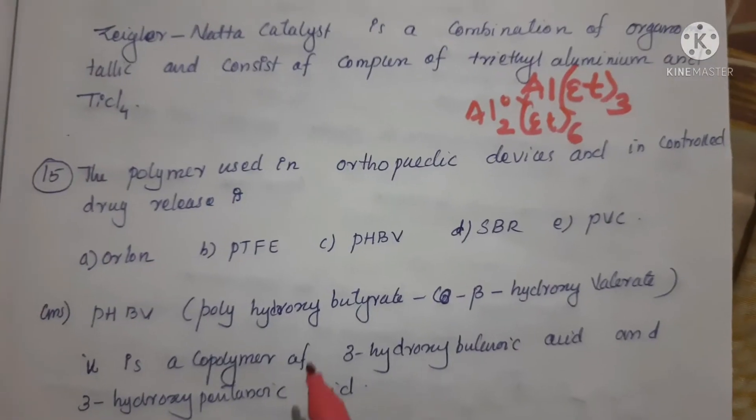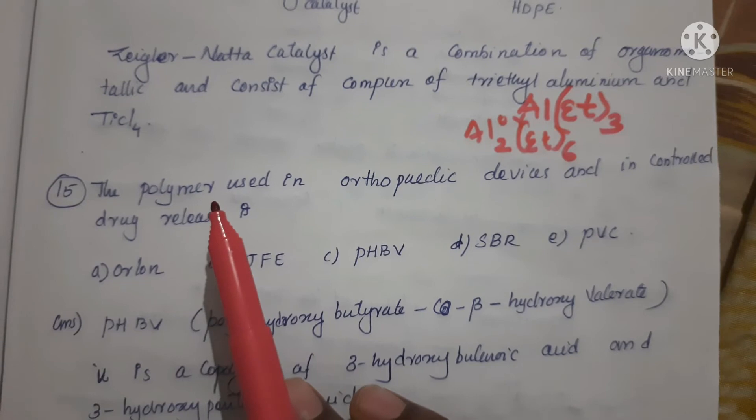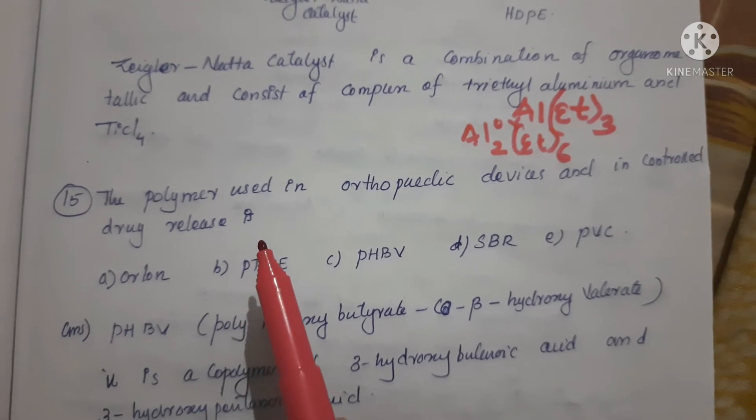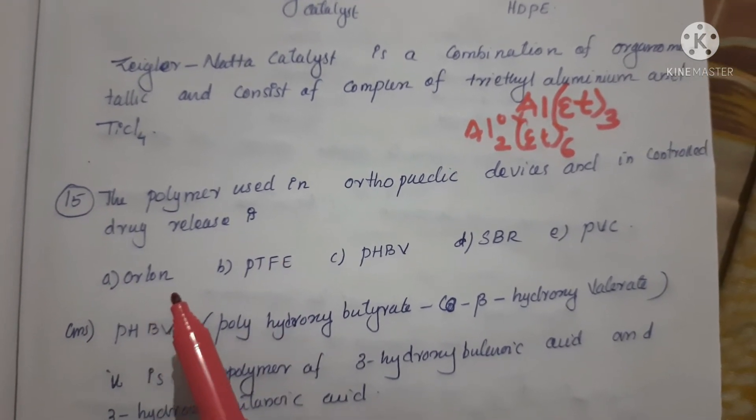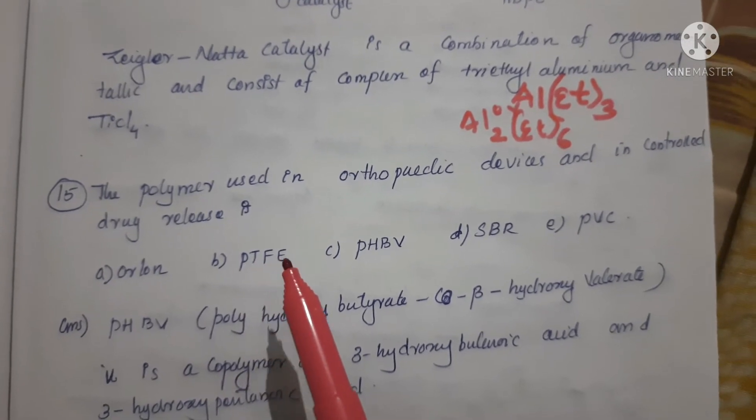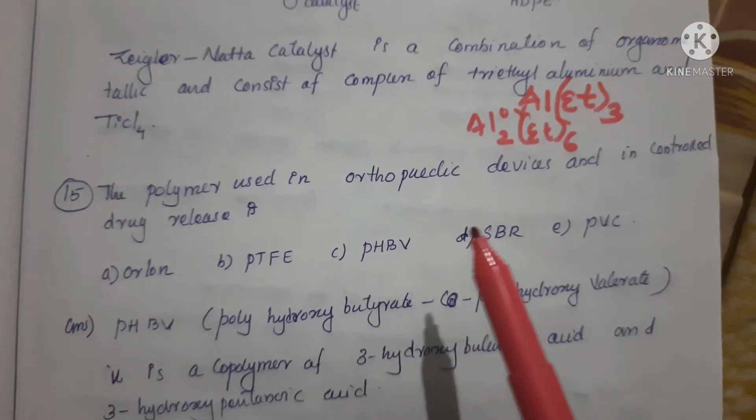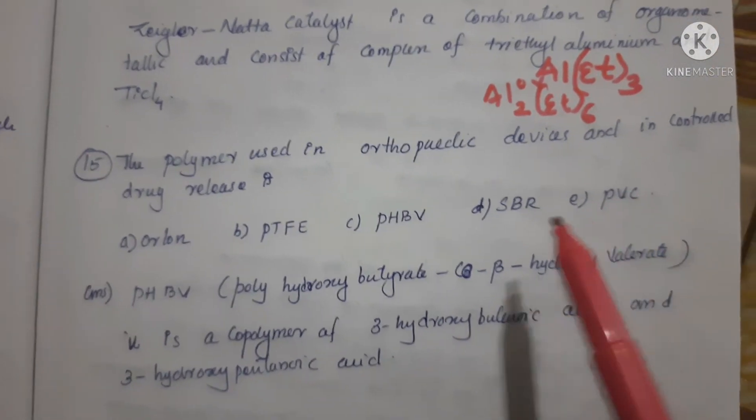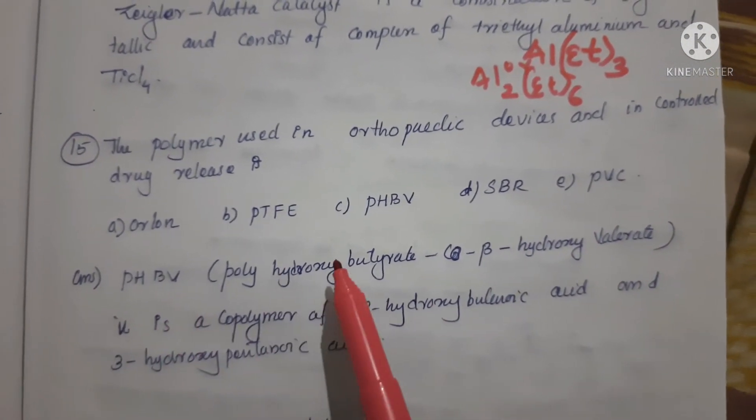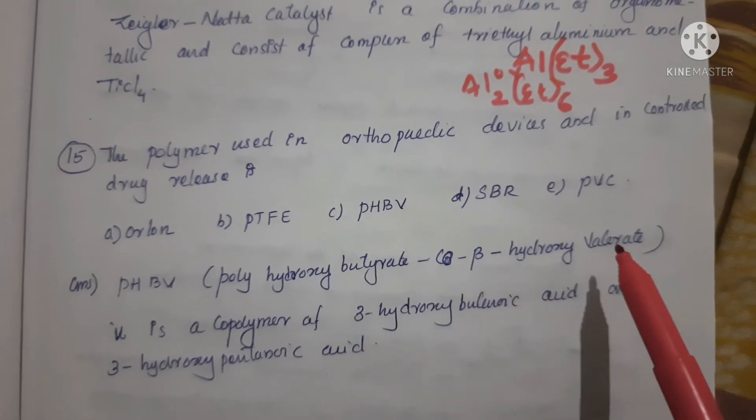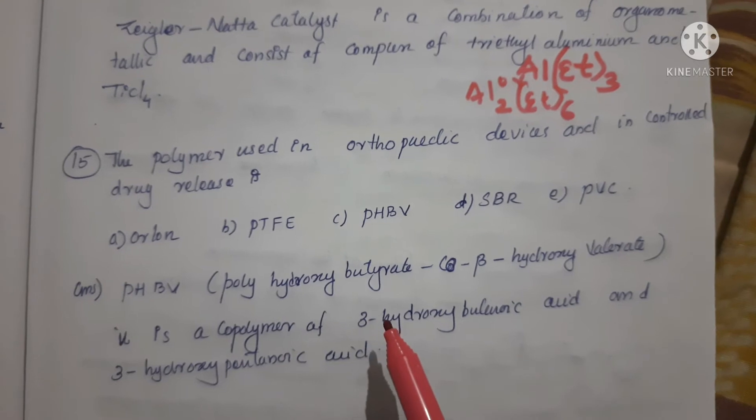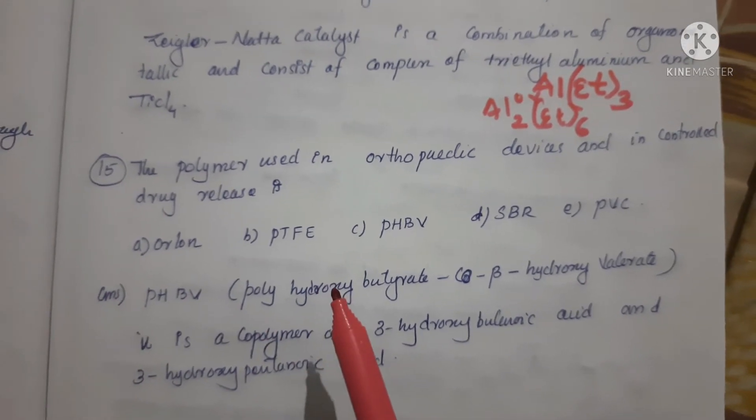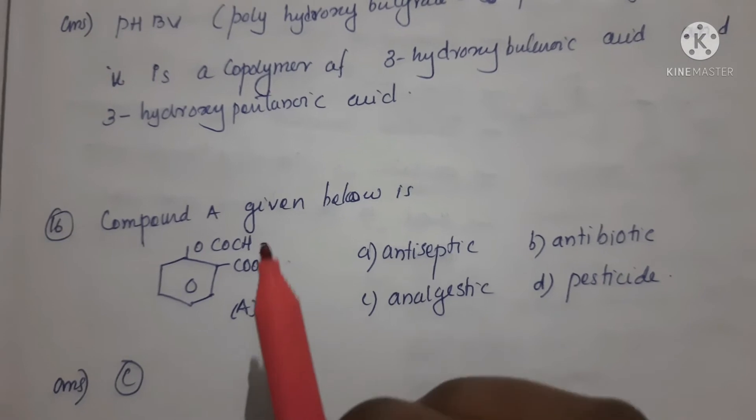Next question: the polymer used in orthopedic devices and in controlled drug release - Option A: Orlon, Option B: PTFE (polytetrafluoroethylene), Option C: PHBV, Option D: SBR, Option E: PVC. Correct answer is PHBV - polyhydroxybutyrate-beta-hydroxyvalerate. It's a copolymer of 3-hydroxybutanoic acid and 3-hydroxypentanoic acid. It's a biodegradable polymer.